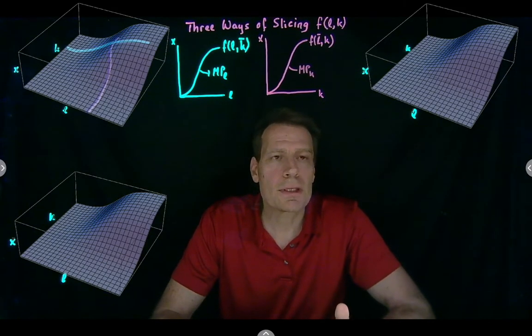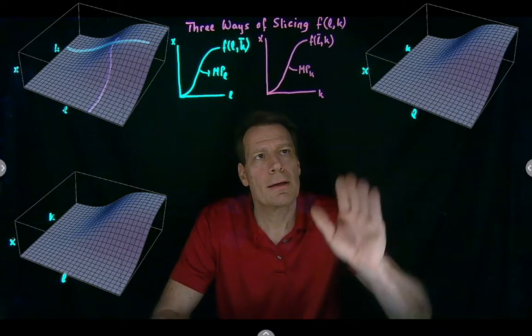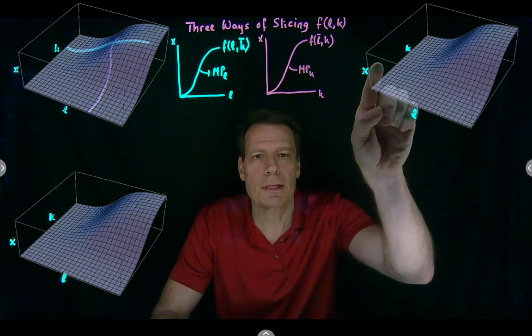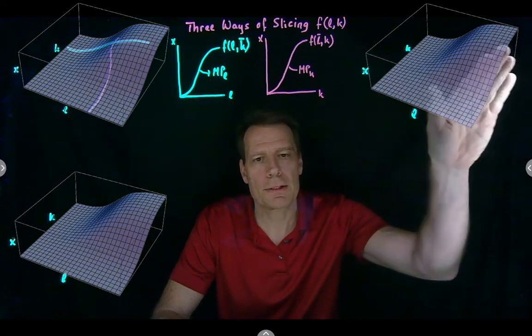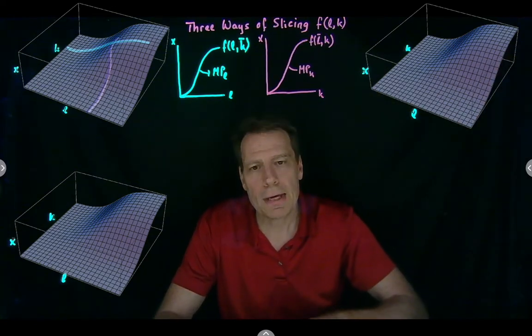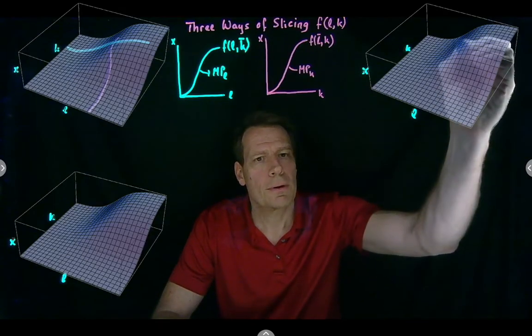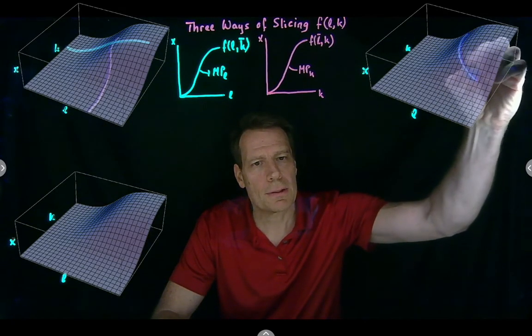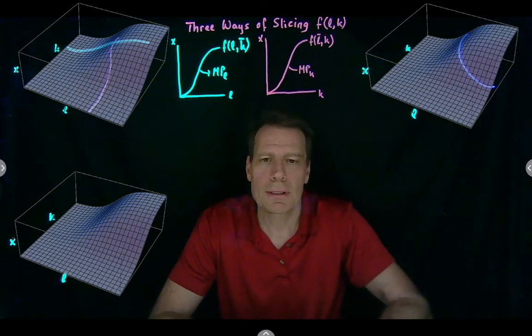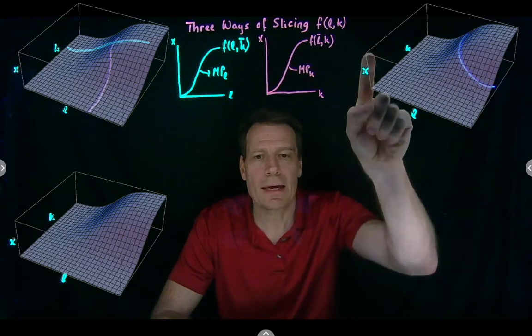We then moved to a different slice, and said, suppose we pick an output level, a height in this picture, and take a horizontal slice. If we do that, we trace out all the combinations of input bundles that produce the output level that happens at that height in the picture.